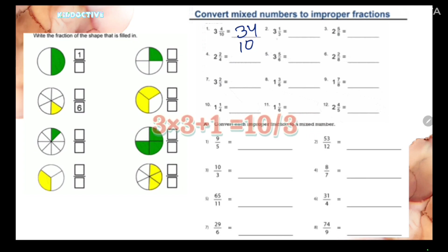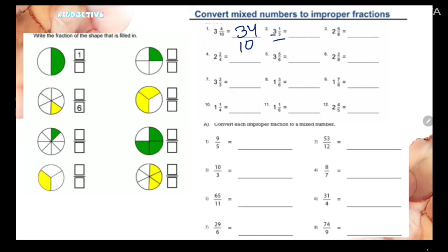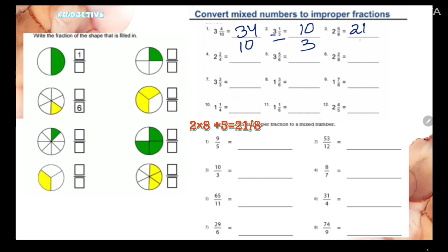So we write thirty-four in the numerator and ten in the denominator: thirty-four upon ten. In the same way, for the other examples: whole number multiplied by denominator — three threes are nine, plus one is ten, giving ten upon three; and two eights are sixteen, plus five is twenty-one, giving twenty-one upon eight. I hope you understood how to convert mixed fractions to improper fractions.